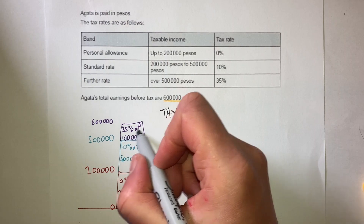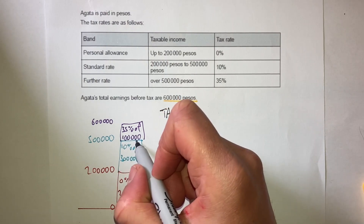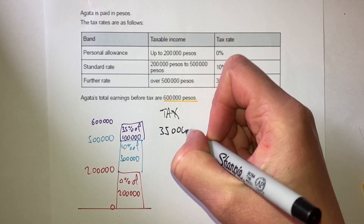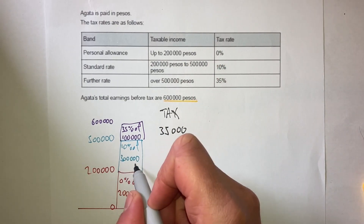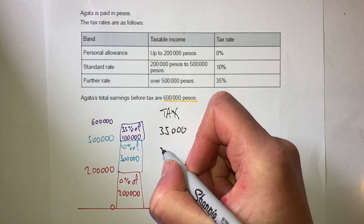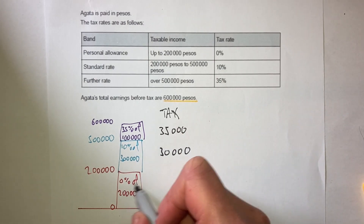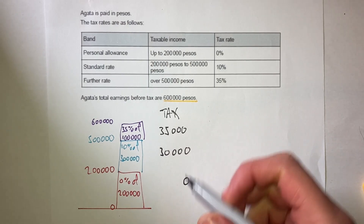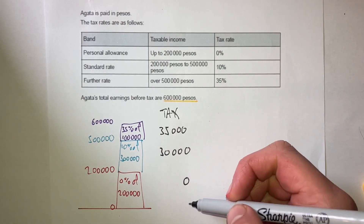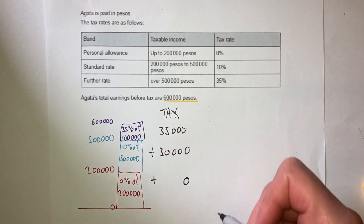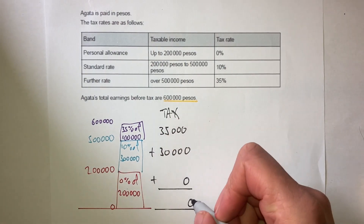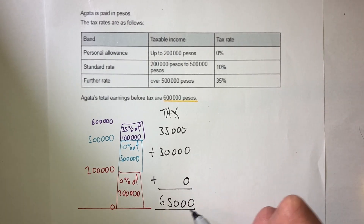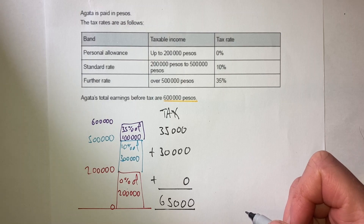35% of 100,000 is 35,000. 10% of 300,000 is 30,000. Zero percent of 200,000 is zero. If I add these up, I'll get the total tax — this person has to pay 65,000 pesos in tax each year.